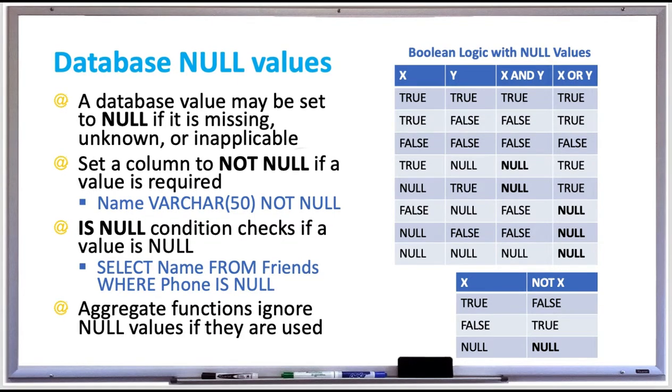And the table on the bottom corner shows you that if x is true, NOT x is false. If x is false, NOT x is true. And if x is null, NOT x is also null.